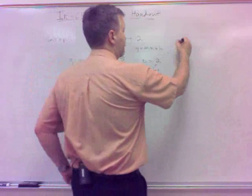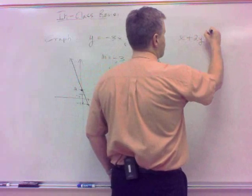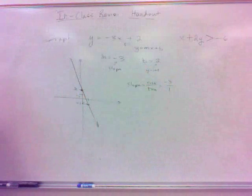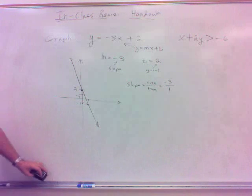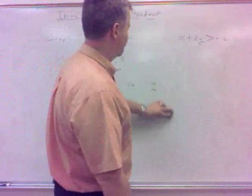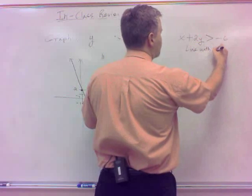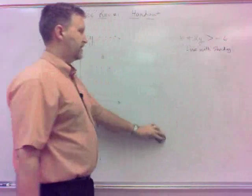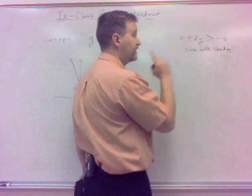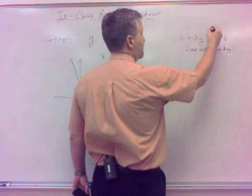The other graphing one that I know I probably should do an example here of is the inequality. Inequality, basically the same thing, isn't it? If I had x plus 2y is, say, greater than negative 6. That is basically the same as the ones we've just been talking about here, except what? What else is there? It's going to be a line, sure enough, but with shading.